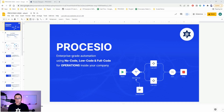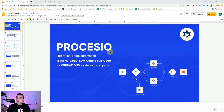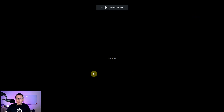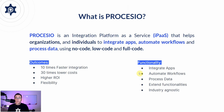Hi guys, this is Mihai, I'm the founder and CEO of Procesio. I want to tell you some things about Procesio — first of all, what it is. Procesio is an enterprise-grade automation technology; we use no-code, low-code, and full-code to automate operations inside companies. I've prepared this small presentation to highlight several aspects of our technology.